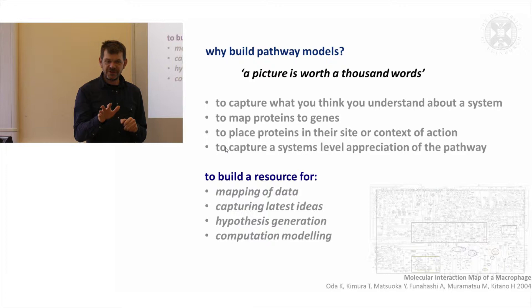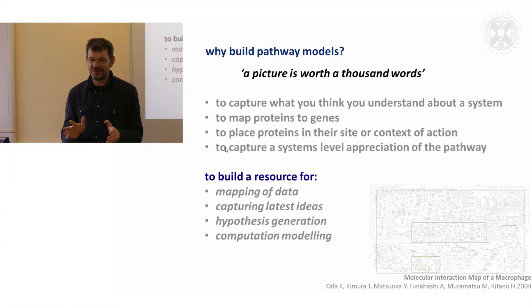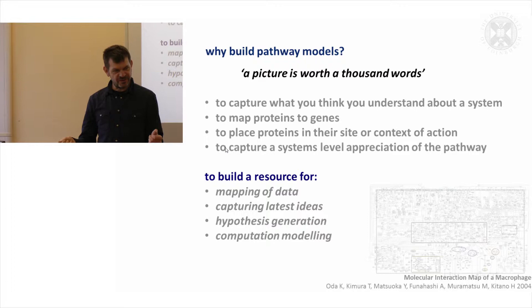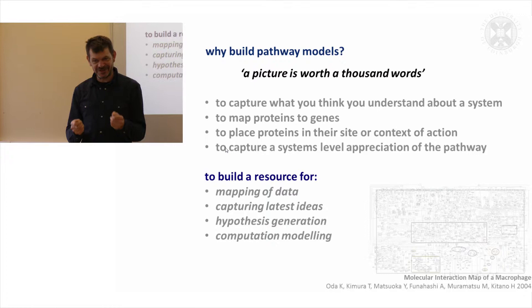Quite often you'll find situations where there are five different names for the same protein — three or two names often in use — so you can read two papers by two different authors and not realise they're talking about the same thing. It's confusing. It's the Tower of Babel in genomics world.